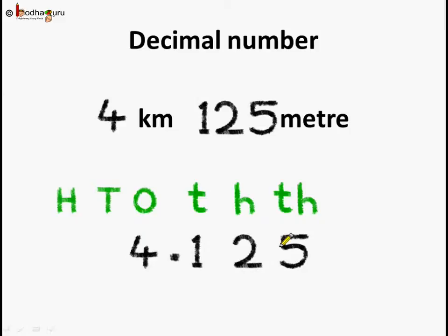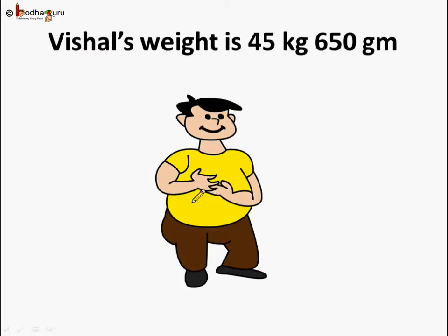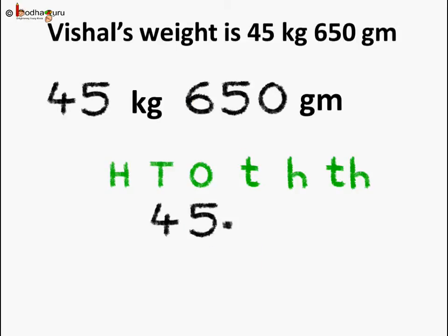Now, let us try more examples. Coming to the next problem, Vishal's weight is 45 kg and 650 grams. Let's convert it to a decimal number. So, 45 kgs and 650 grams. This is easy.